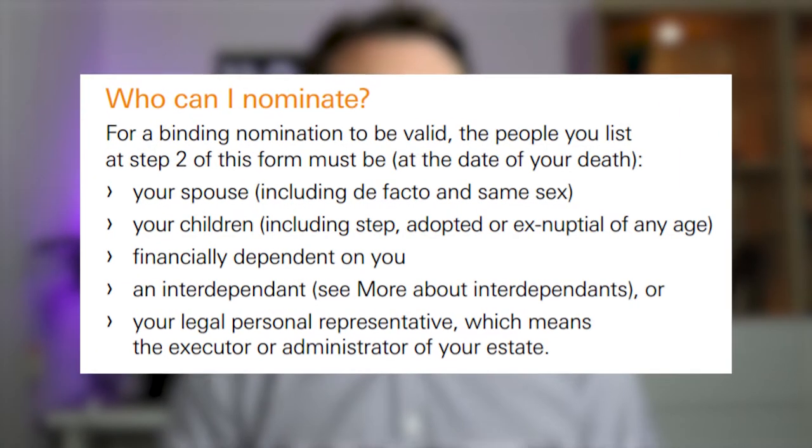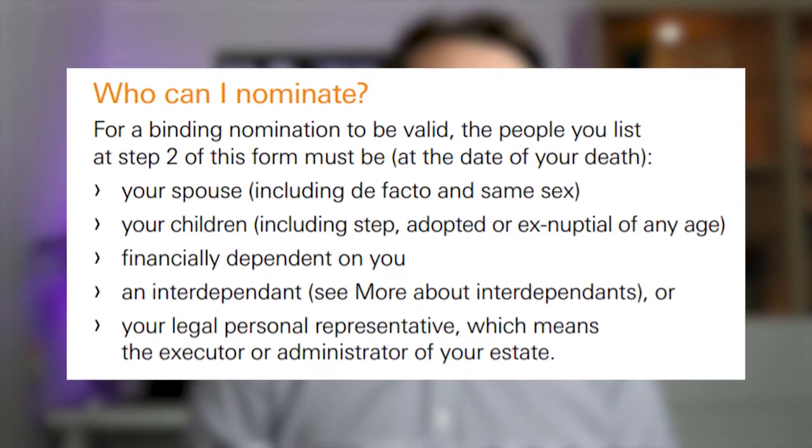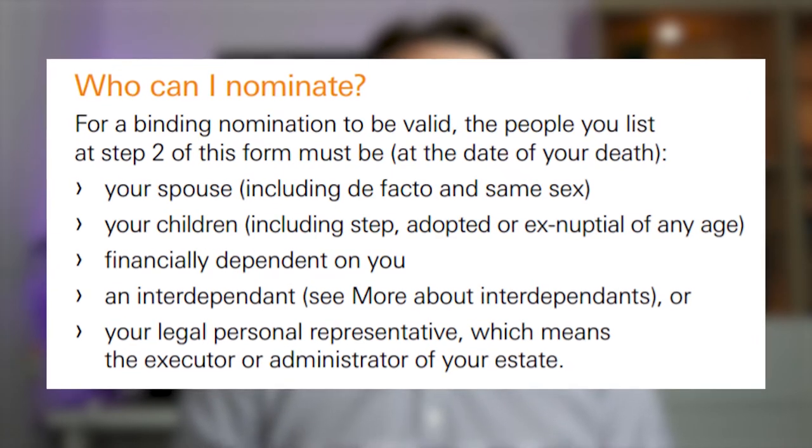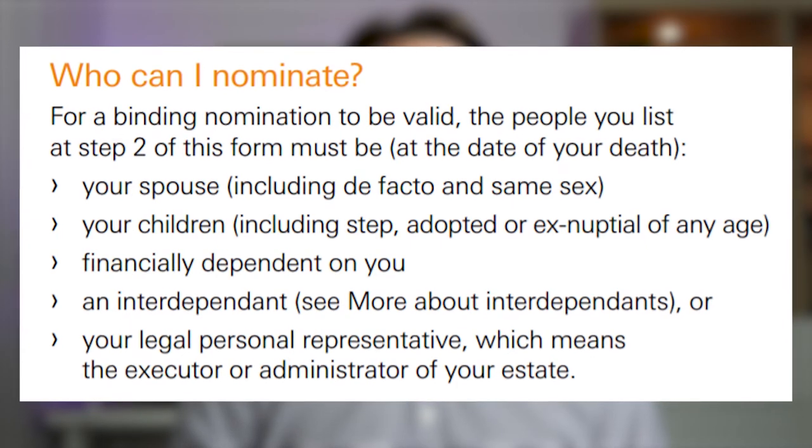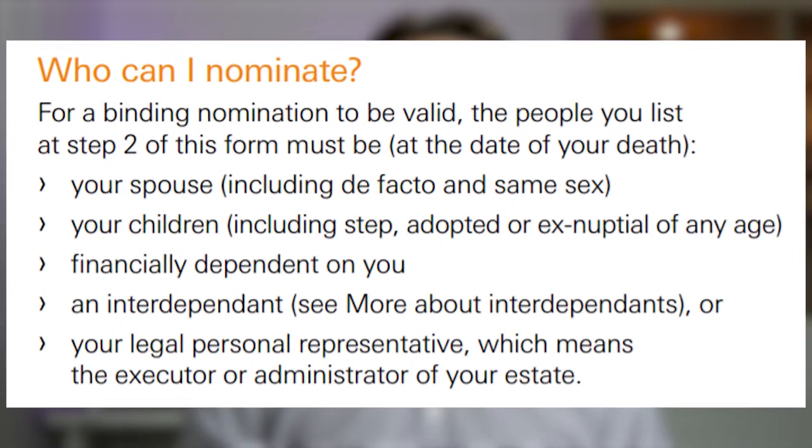One important note: it needs to be a valid binding nomination, so the paperwork needs to be filled out, and there are only certain people you can nominate. It can be a spouse, any of your children, a financial dependent, someone in an interdependency relationship with you, or a legal representative — meaning you can nominate your super to go to your will, and then your will can nominate it out from there.